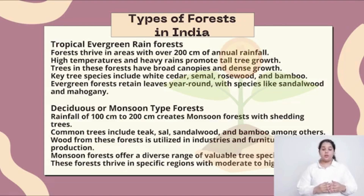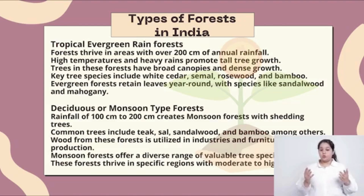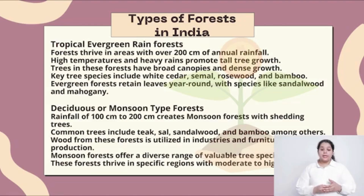Evergreen forests retain leaves year round, with species like sandalwood and mahogany. The deciduous or monsoon type forest is characterized by rainfall of about 100 cm to 200 cm, creating monsoon forests with seasonal shedding.